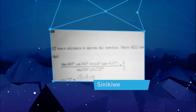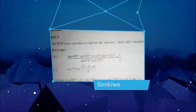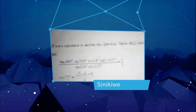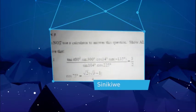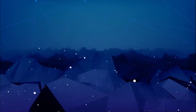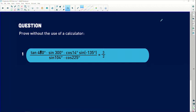Hello, the Tenfold Group. I'm Sneaky Way. I would like you guys to help me with this question 5.1.1. Right, so this question says prove without the use of a calculator that tan 480° × sin 300° × cos 14° × sin(-135°) divided by sin 104° × cos 225° - all that expression on the left-hand side can give us a value of 3 over 2 without using a calculator.